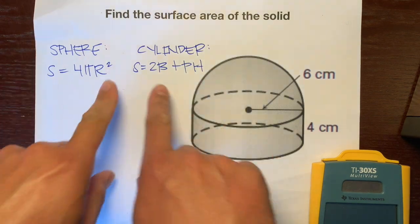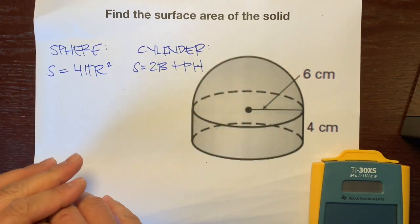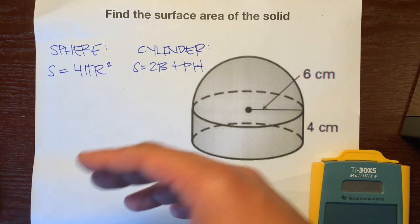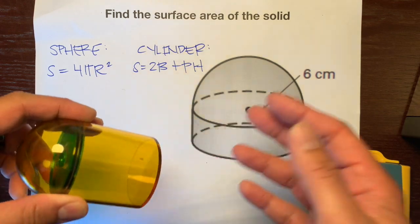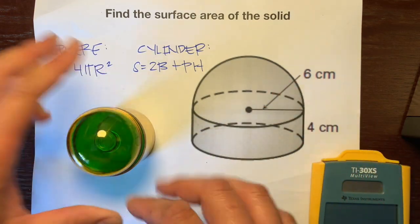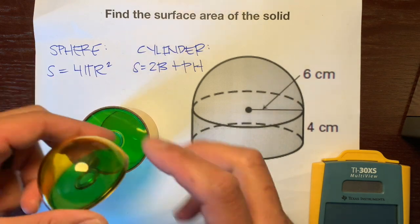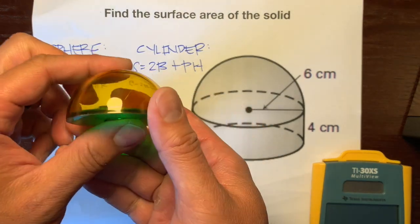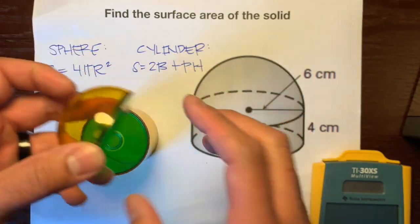However, we're not going to use these formulas exactly how they're written here because with composite figures, certain things are covered up and certain things we don't need. Certain squares aren't found on the surface. If we look at this, first thing is we don't have a full sphere. We have a hemisphere, which is half of a sphere.